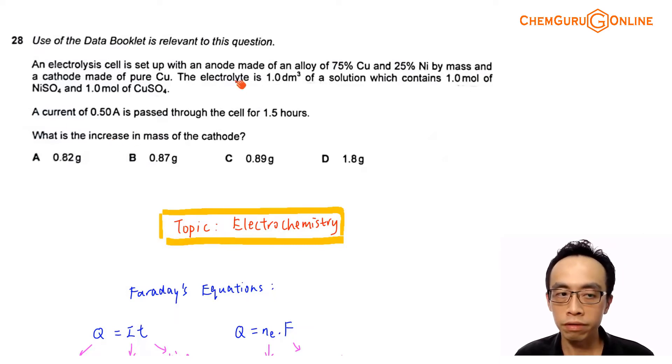Now question 28, use of the data booklet is relevant to this question. An electrolytic cell is set up with an anode made of an alloy of 75% copper and 25% nickel by mass and a cathode made of pure copper. The electrolyte is 1.0 dm³ of a solution which contains 1.0 mol of nickel sulfate and 1.0 mol of copper sulfate. A current of 0.50 ampere is passed through the cell for 1.5 hours. The question is asking what is the increase in the mass of the cathode.